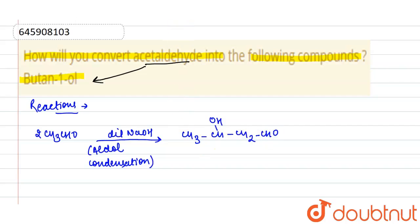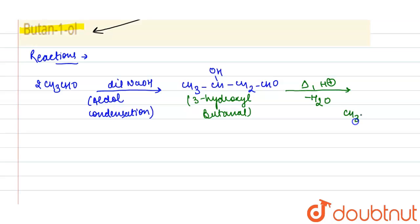Further, it is heated in presence of acid and on dehydration it will convert into butenal, that is CH3-CH=CH-CHO. This is butenal. Further, in presence of Tollens reagent, it is converted into butenoic acid.